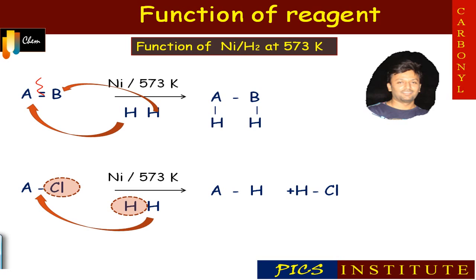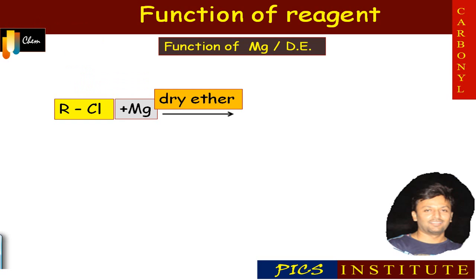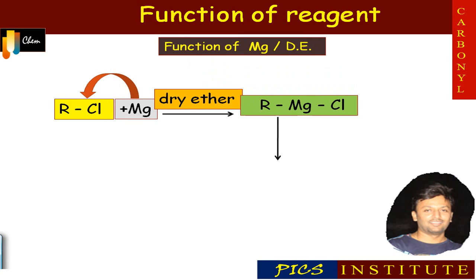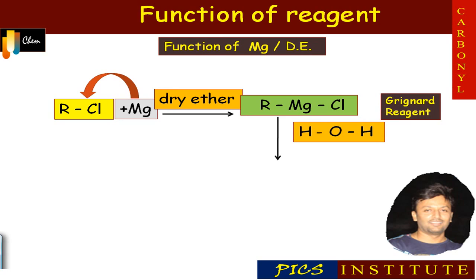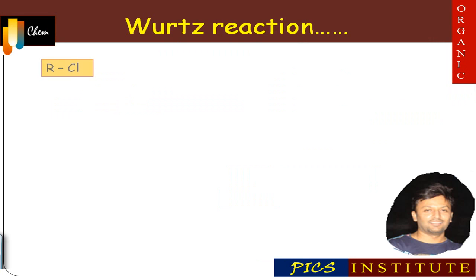The second reagent is magnesium in dry ether followed by hydrolysis. Magnesium reacts with alkyl halide to form RMgCl, that is alkyl magnesium chloride, also called a Grignard reagent. On reaction with water, splitting takes place and hydrogen goes to the alkyl group to form an alkane.